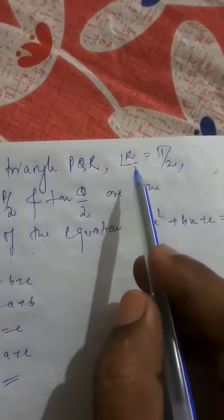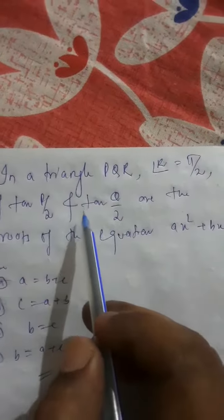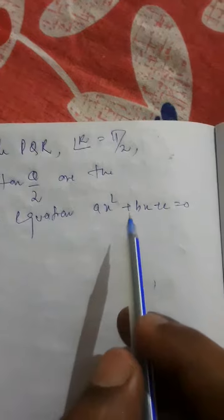In a triangle PQR, R is 90 degree and tan P by 2 and tan Q by 2 are the roots of the equation Ax square plus Bx plus C is equal to 0.